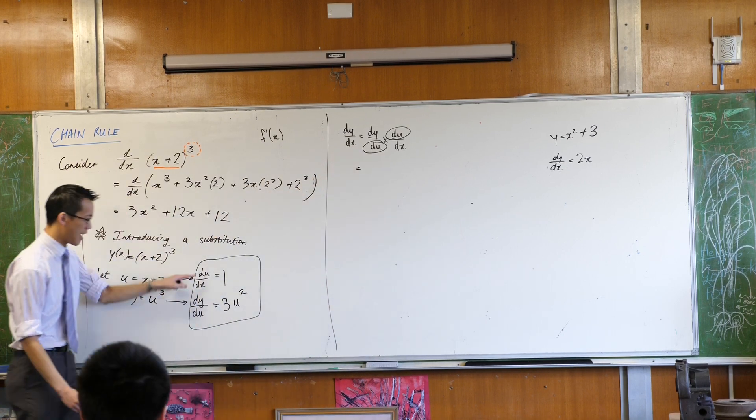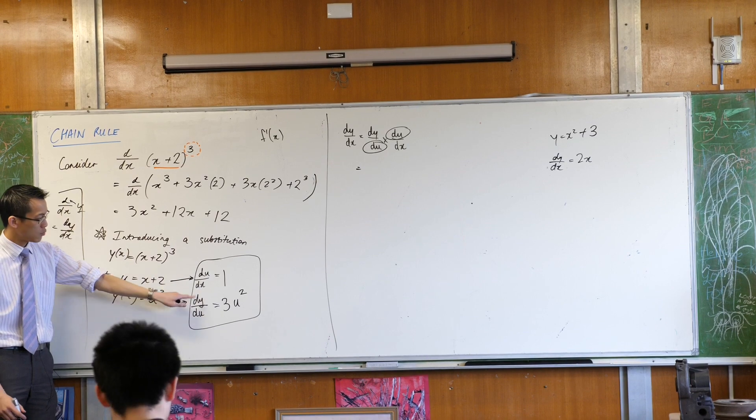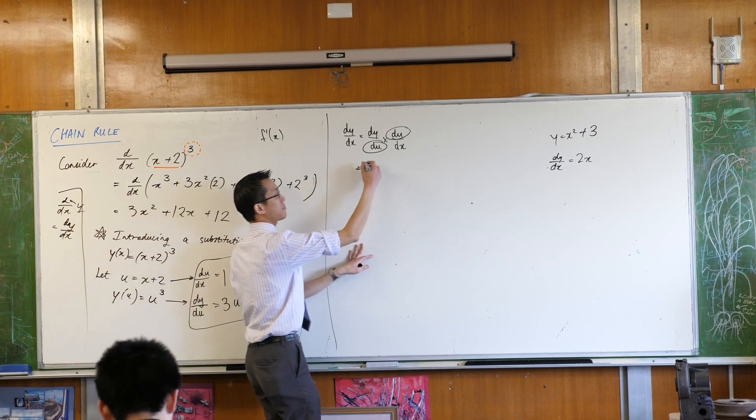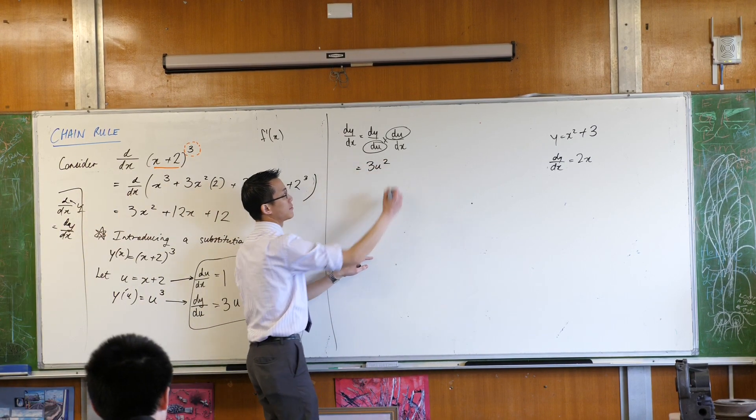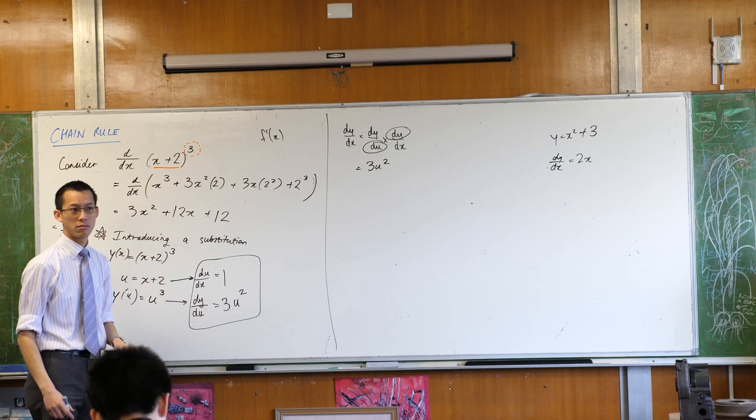So I'm just going to write what I know these things to be. Dy/du is 3u². What's du/dx? It's just one.